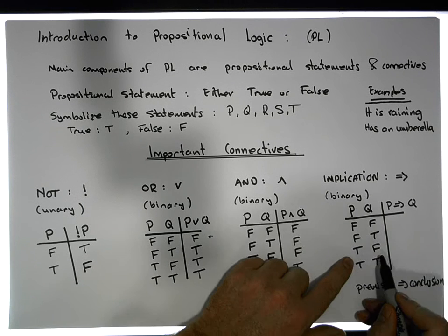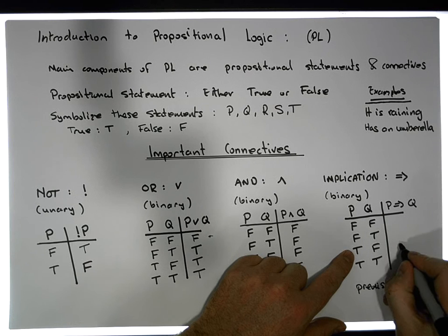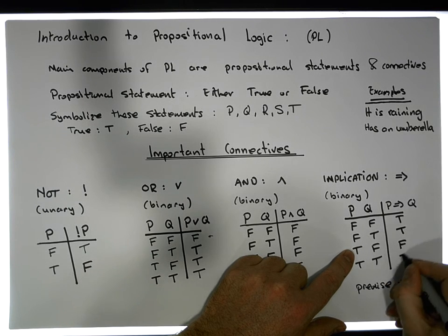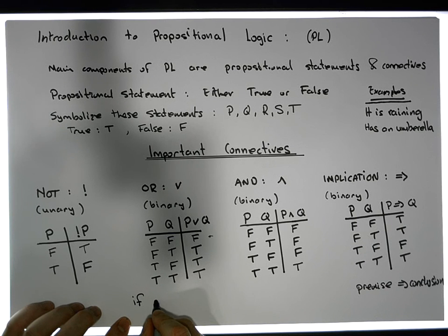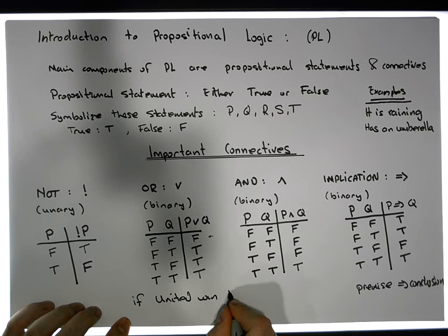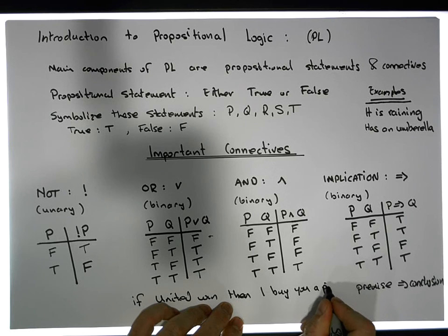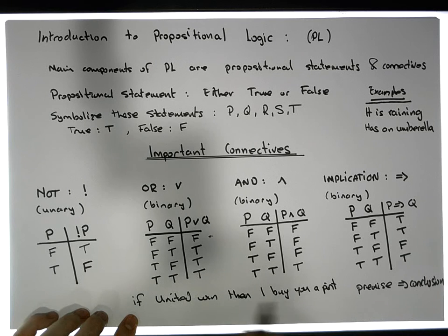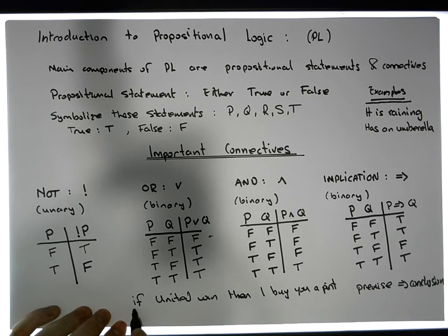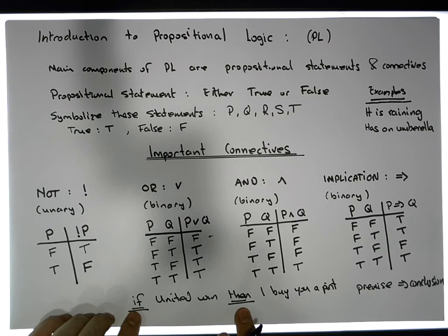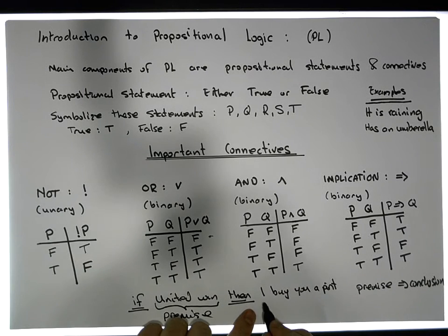Let me fill in the truth table and then rationalize what's going on. The only time it's ever false is when the premise is true and the conclusion is false — everywhere else it's true. As an example: 'if United win, then I'll buy you a pint.' What's between the IF and the THEN is the premise, and what's after the THEN is the conclusion.